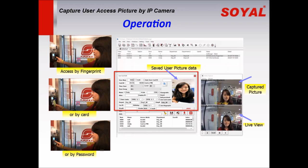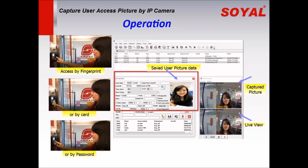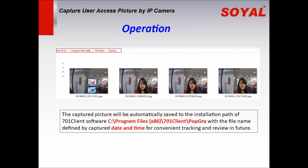At the same time, the software will pop up to the User Card Edit window, so the administrator can compare if the captured picture matches the existing user picture data or not. The captured picture will be automatically saved to the installation path of the 701 software, with the file name defined by the captured date and time, for convenient tracking and review in future.